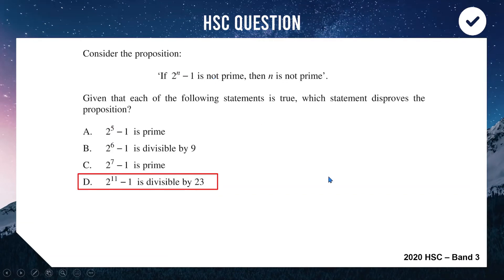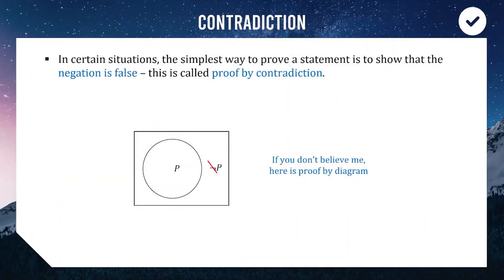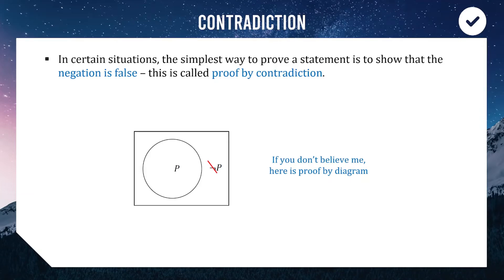The next part of this lesson is proof by contradiction. Sometimes the simplest or cleverest way to prove a statement is to show that its negation is false. If a statement's negation is false, that must mean the original statement is true. This process is called proof by contradiction.